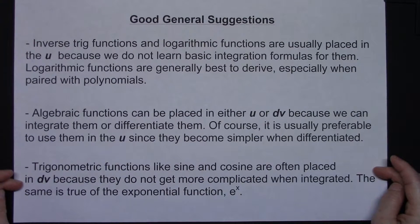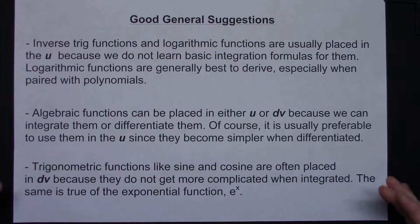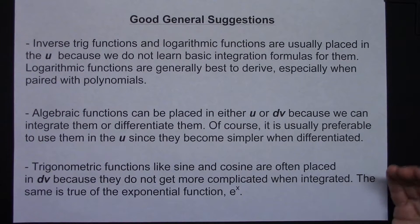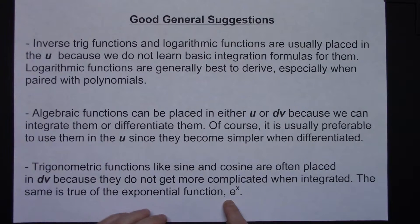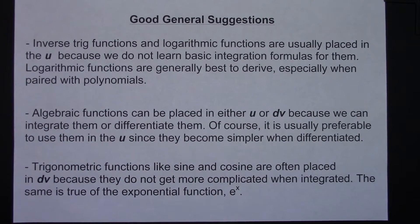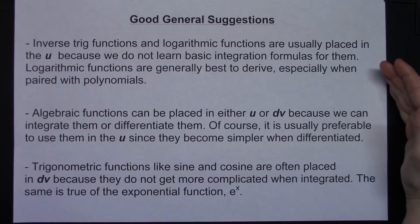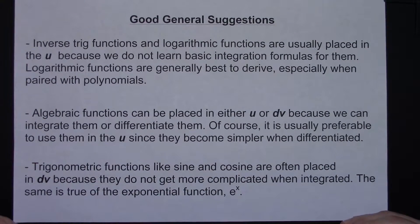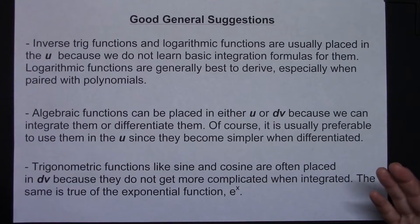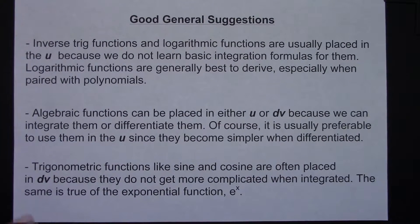Trigonometric functions like sine and cosine are often placed in the DV because they don't get any more complicated when you integrate them. The same is true for the exponential function. So if you have e to the x and a sine, you can put the sine in the DV, but you could also put e to the x in the DV, because neither gets more complicated when integrated. Those are three general suggestions that are good pieces of advice if you need something more than just an acronym.